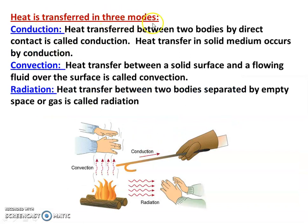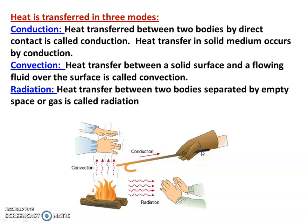Heat transfer occurs in three modes: conduction, convection, and radiation. For conduction, consider a metal rod with a source of heat at one end — the heat is transferred through the metal rod. Heat transferred in a solid medium is called conduction. Heat transferred between two bodies by direct contact is also called conduction.